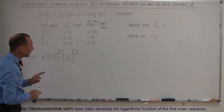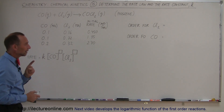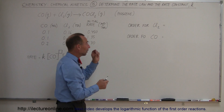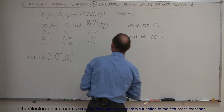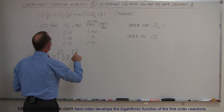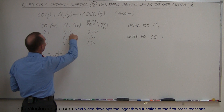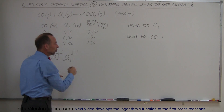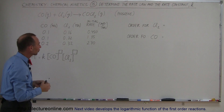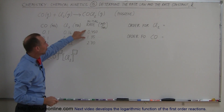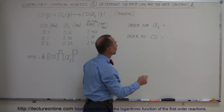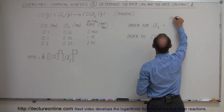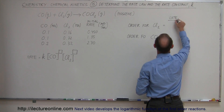From that data, we should be able to figure out the order for chlorine gas and the order for carbon monoxide gas. The way we do that is by showing the ratio of the rates. Let's start with chlorine gas — its concentration went from 0.16 to 0.32, so we doubled the concentration of chlorine gas, and then we see the rate change.